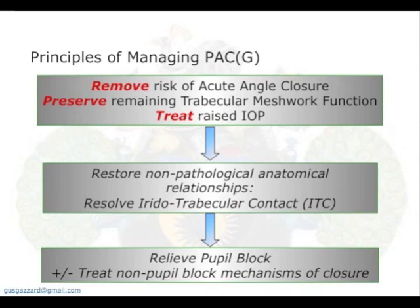The principles of managing angle closure generally apply here. Firstly, we've had to remove the risk of acute angle closure for all of these groups, because we've had to do a PI to be able to diagnose post-PI iridotrabecular contact, which is what we're talking about. We would then like to preserve any remaining trabecular meshwork function, if only we knew how, and obviously we're going to treat the raised IOP.